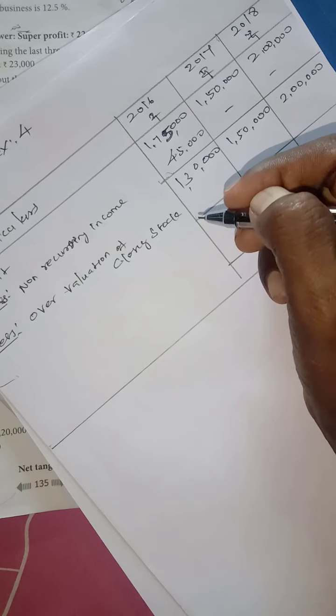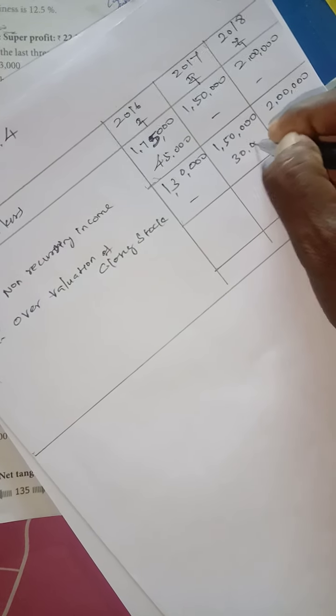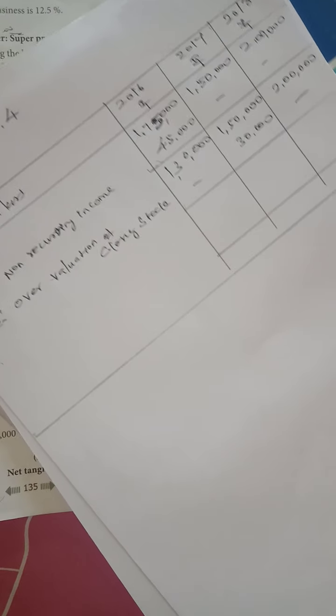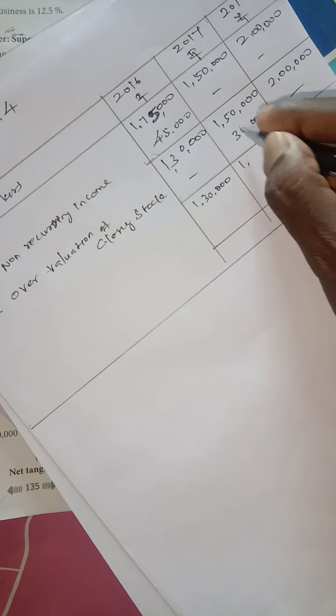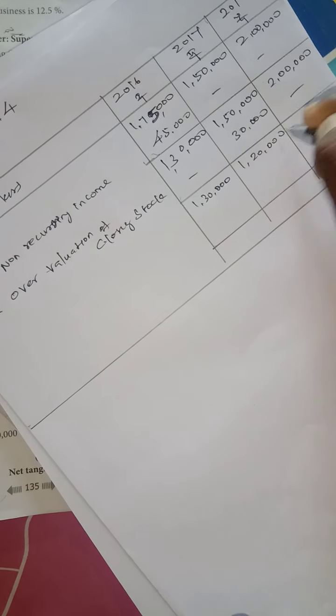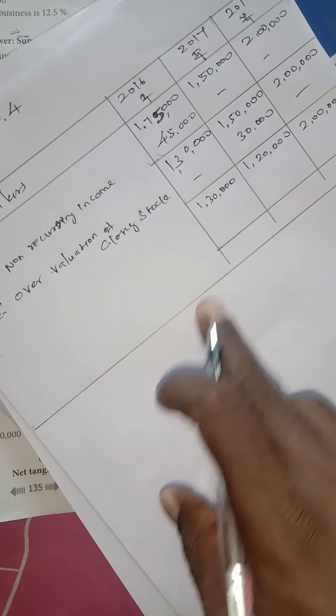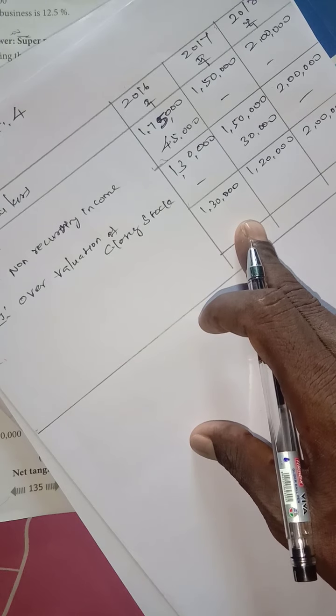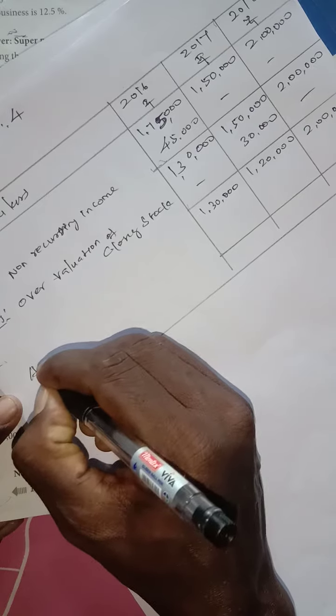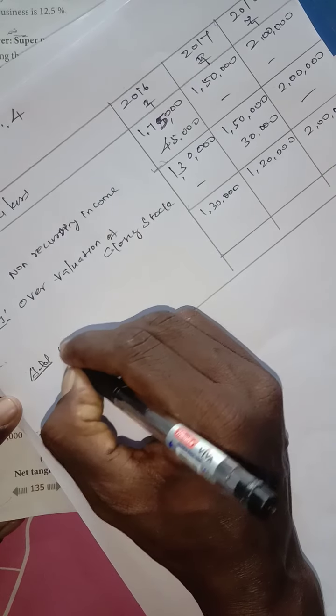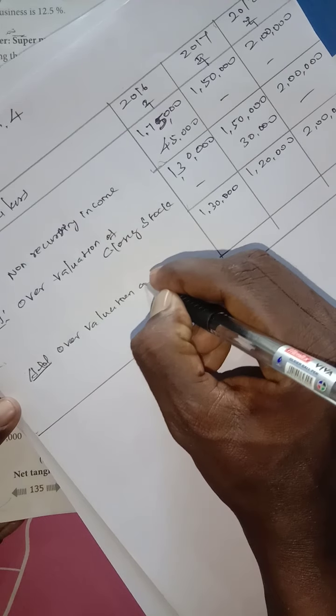₹30,000 for 2017. So we get ₹1,30,000, ₹1,20,000, ₹2,40,000.